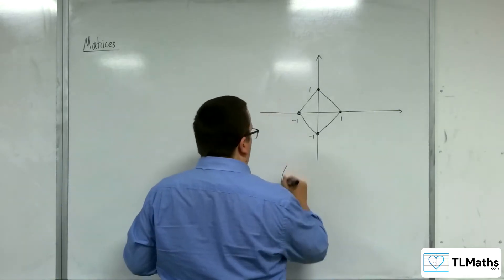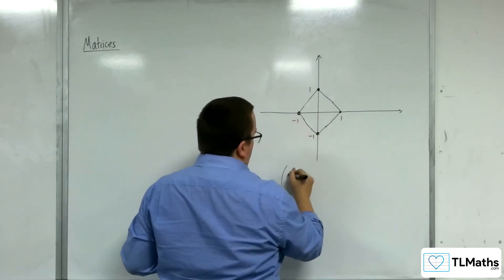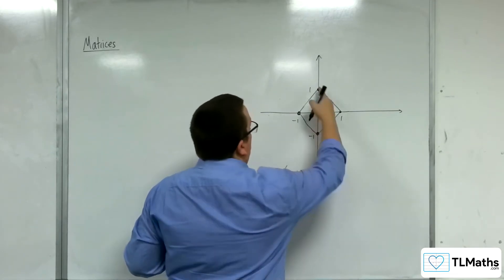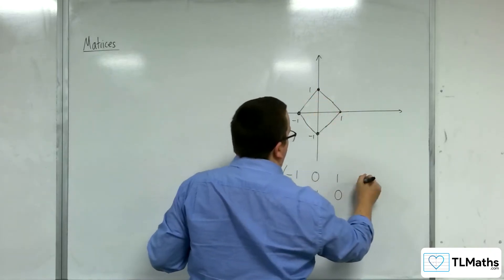So this rhombus, we have its coordinates of its corners, starting from this one, so minus 1, 0, then 0, 1, then 1, 0, and then 0, negative 1.